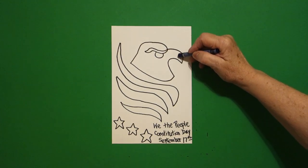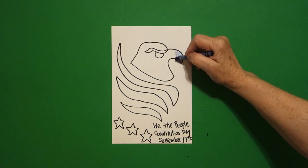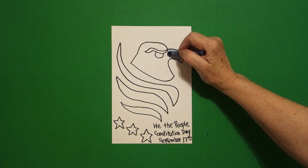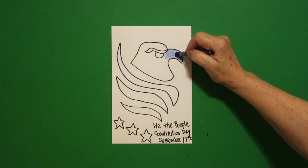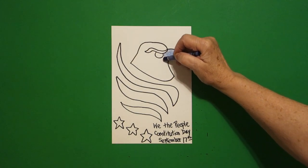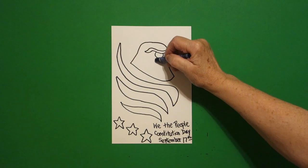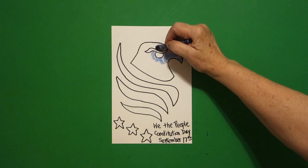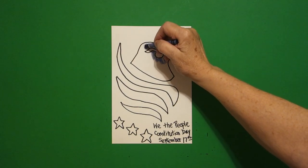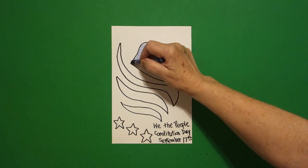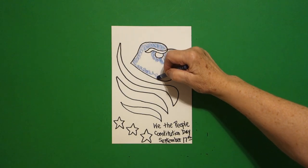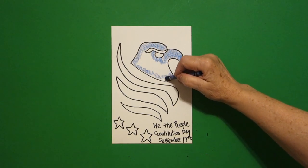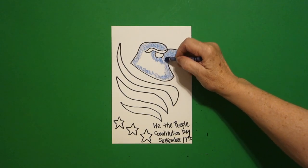You only need two colors. And what's interesting in this drawing is how many symbols of the United States are all combined together to make this one drawing. So, on top, in case you didn't know what this was, this is the bald eagle, our national bird. And we're just going to color that in blue.